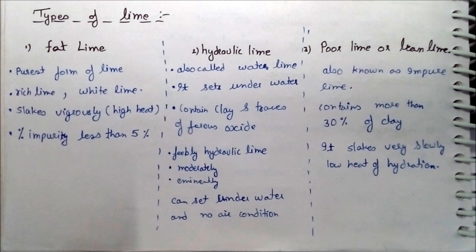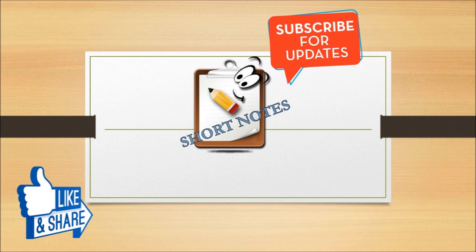There are mainly three types of lime. The first is fat lime, which is the purest form of lime — also called rich lime or white lime. When added to water, it gives off heat of hydration, and its impurities content is very small, around 5%. The second is hydraulic lime, also called water lime — it sets under water. The third is poor lime or lean lime, also called impure lime — it contains about 30% clay and other impurities.